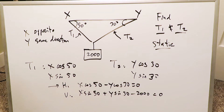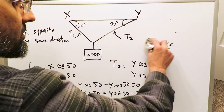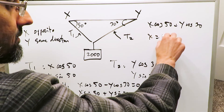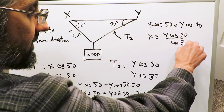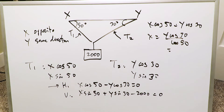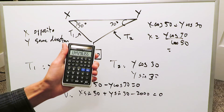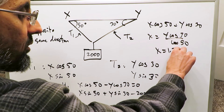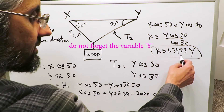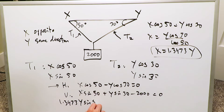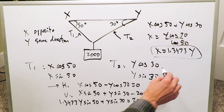Looking at the first equation: x cosine 50 equals y cosine 30, so x equals y cosine 30 divided by cosine 50. Solving that gives x equals 1.3473y. Substituting into the second equation: 1.3473y times sine 50 plus y sine 30 equals 2000. Now all we have to do is solve for y.